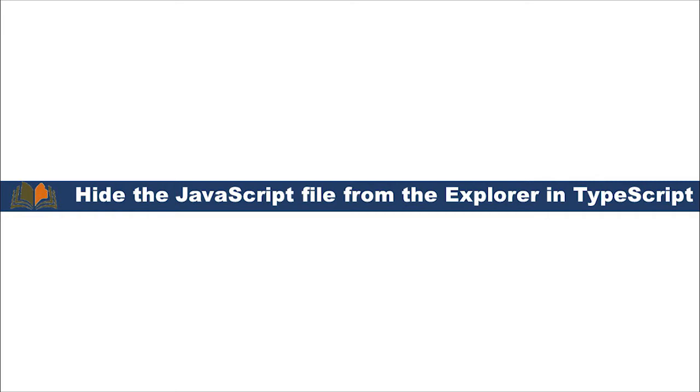Basically, the JavaScript file will generate automatically when the TypeScript compiler compiles the TypeScript file. For example, if I have a TypeScript file named hello-world.ts and I compile it using tsc — tsc means the TypeScript compiler — so tsc hello-world.ts will automatically generate a JavaScript file, as I showed in my last video. But those JavaScript files are unnecessary; we are not using those JavaScript files anywhere, we are just using the TypeScript files.